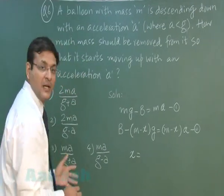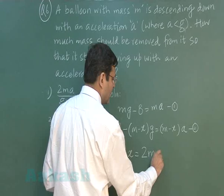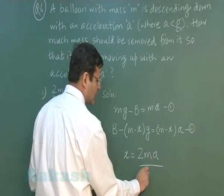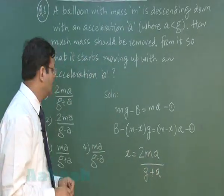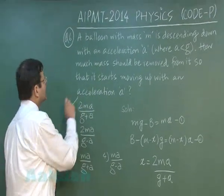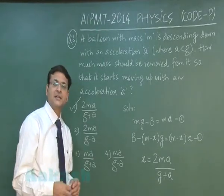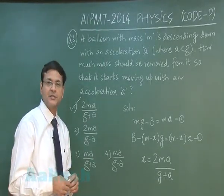If you solve this, you get x equals 2ma divided by (g plus a). If you match with the answer, you find that the first option is the correct option for this particular question. Now let us discuss the next question, question number 7.